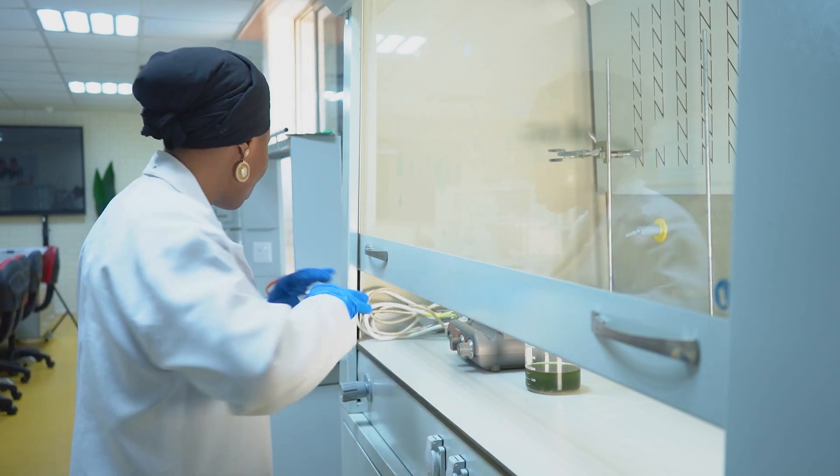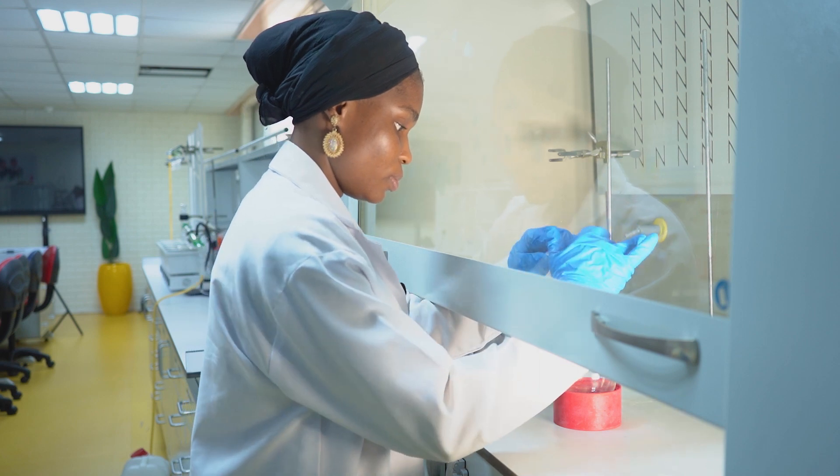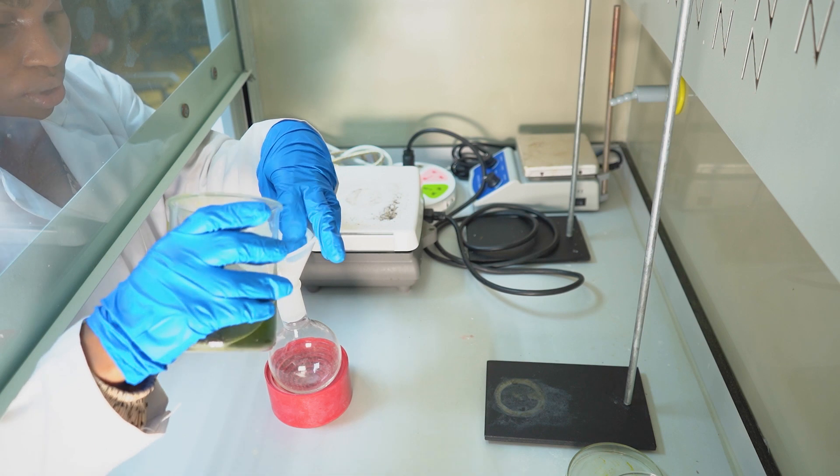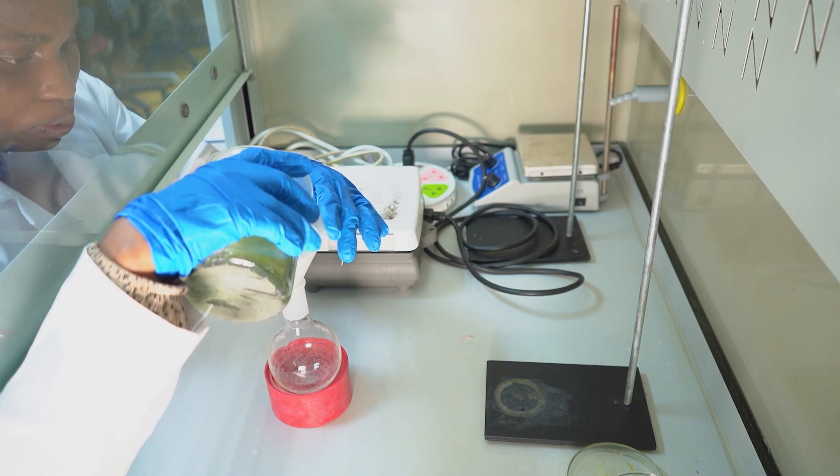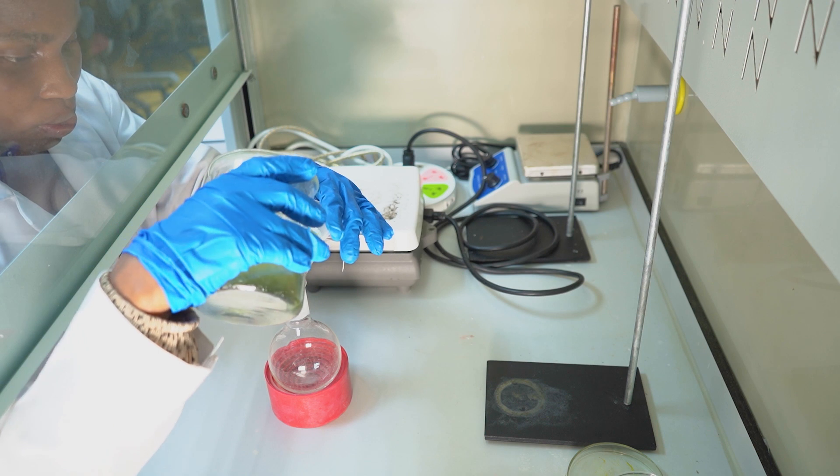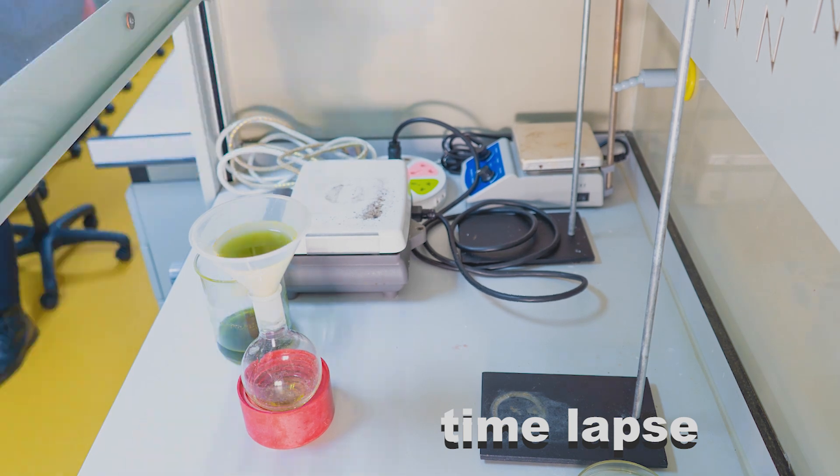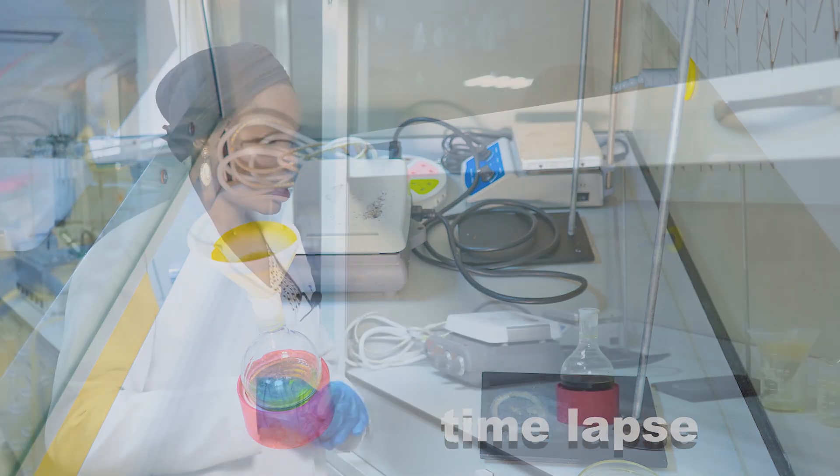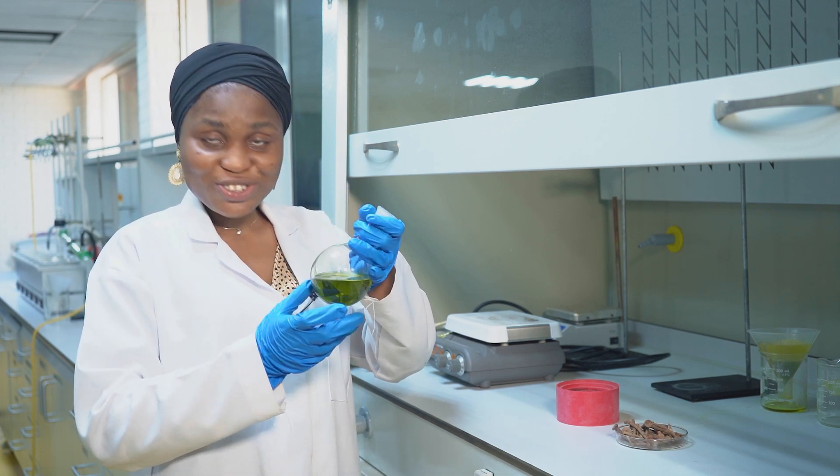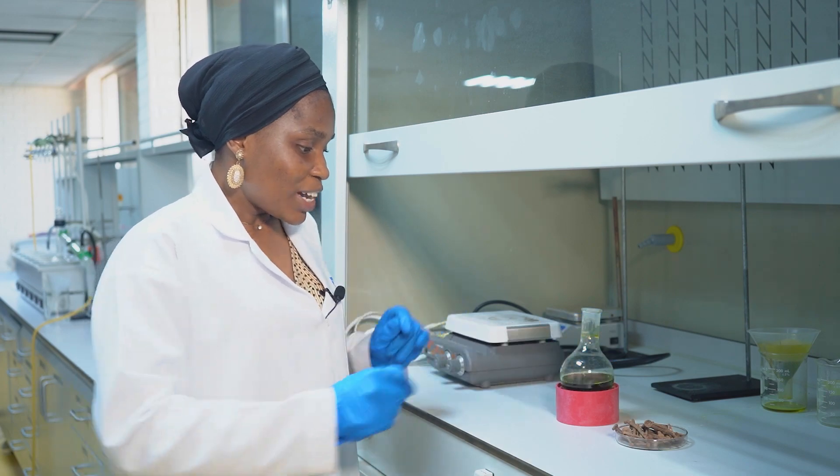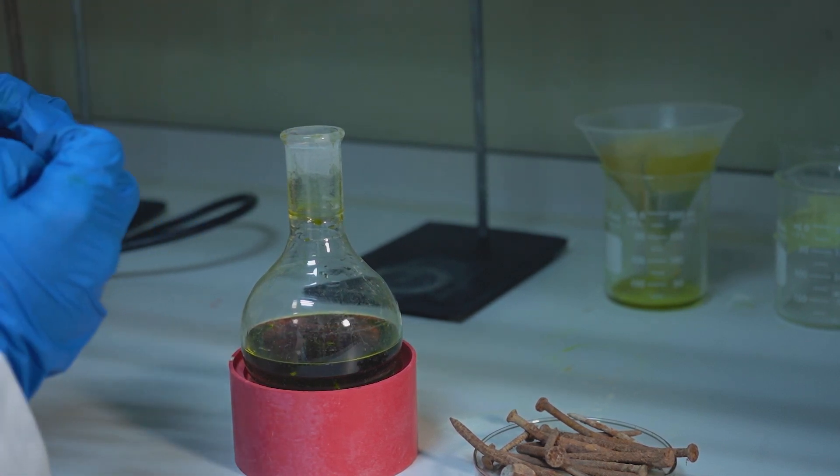So I'll be filtering it into the round bottom flask. This is the solution we obtained after the filtration process, a very nice greenish solution. So I'll be adding just two pieces of rusted nails to it.